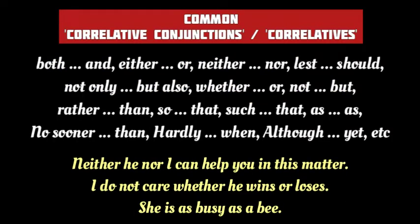Here is a list of some common Correlative Conjunctions. These conjunctions are always used in pairs: both/and, either/or, neither/nor, lest/should, not only/but also, whether/or, not/but, rather/than, so/that, such/that, as/as, no sooner/than, hardly/when, although/yet, etc.